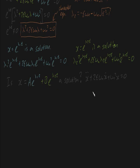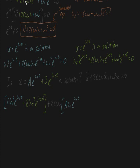Let me substitute this into here. The double derivative term will be equal to a times lambda 1 squared e to the lambda 1 t plus b lambda 2 squared e to the lambda 2 t. Then we have the next term, which is going to be plus 2 zeta omega n times a lambda 1 e to the lambda 1 t plus b lambda 2 e to the lambda 2 t. And we have the final term, which is plus omega n squared times just x, which is a e to the lambda 1 t plus b e to the lambda 2 t.